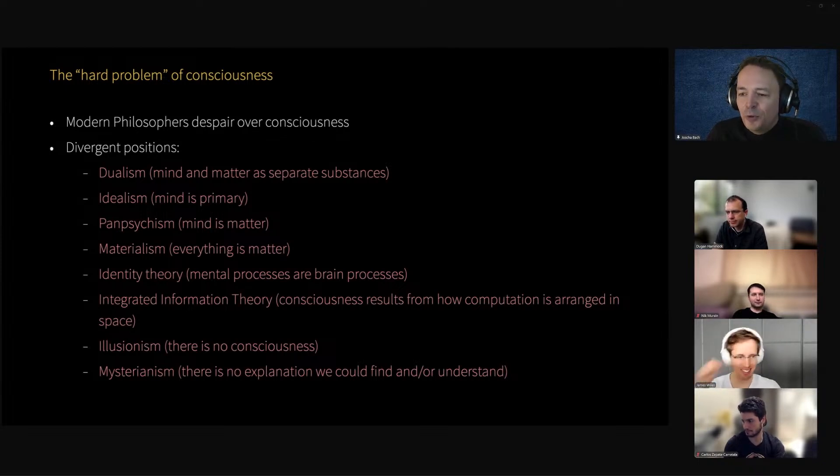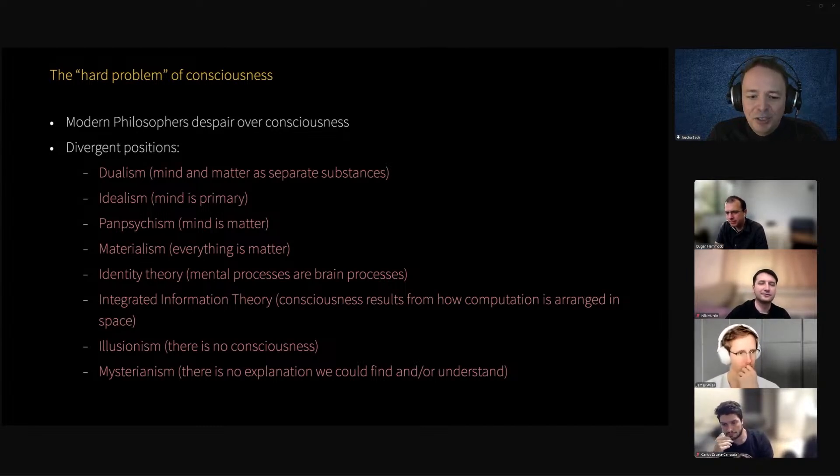Illusionism is the idea that there is no consciousness. You just need to explain why some people pretend that they claim to have it. And Mysterianism is the position that something cannot be understood if Noam Chomsky doesn't understand it. So Noam Chomsky is, of course, a Mysterianist. Colin McGinn has coined the term of Mysterianism. That means there is basically no explanation that could be found or if it could be found, it could be understood by a mere human brain.